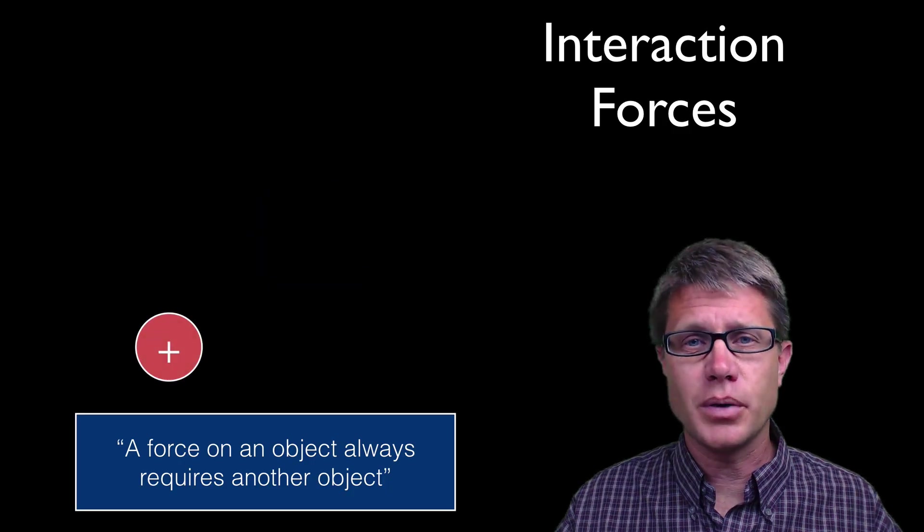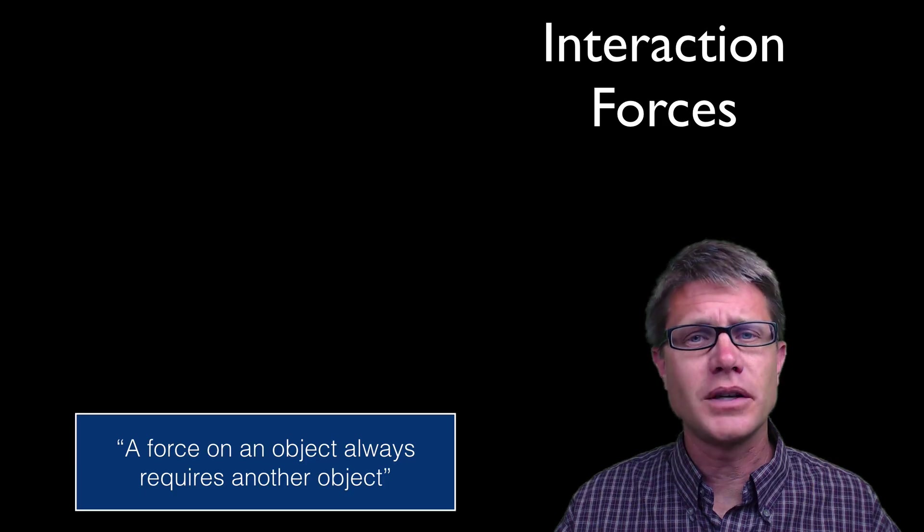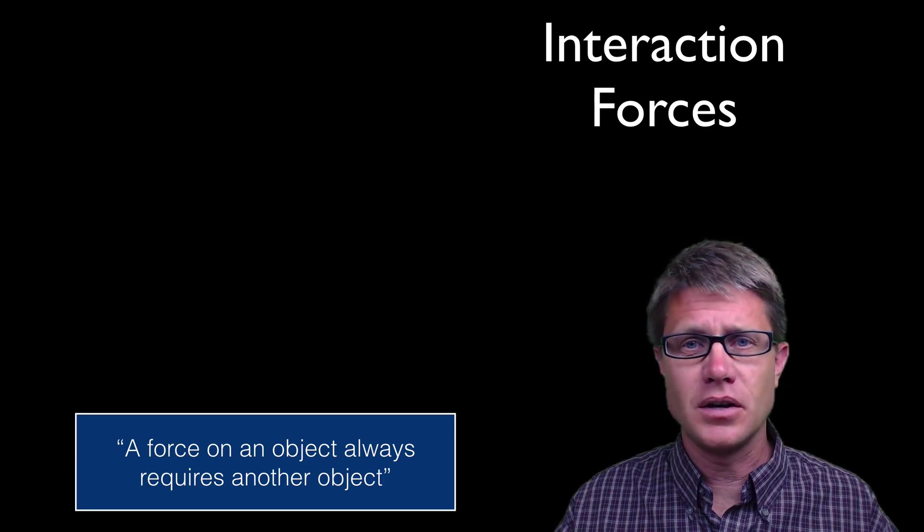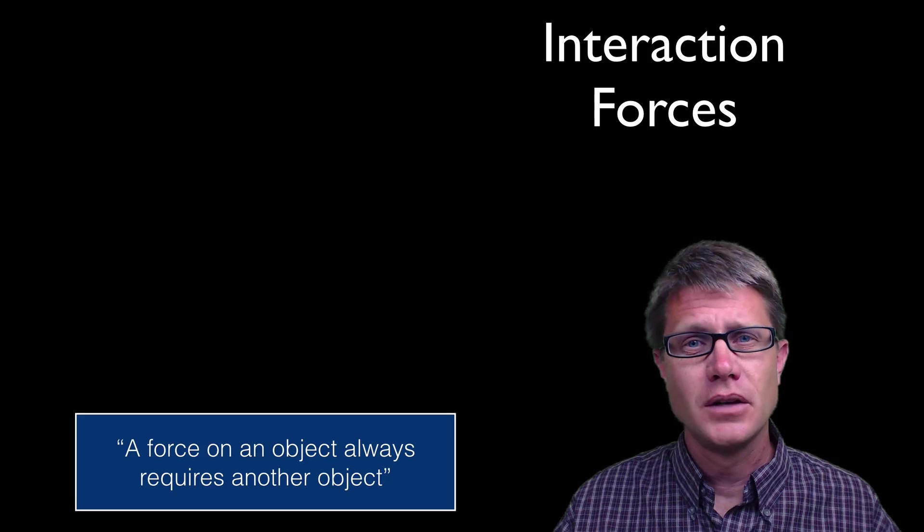Or if we look at this charged particle, as it accelerates up and to the right, there is clearly an electric field but there must be another object. There has to be a positive charge down and to the left or maybe a negative charge up and to the right. So those are pretty easy.